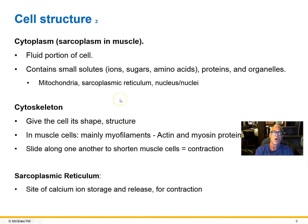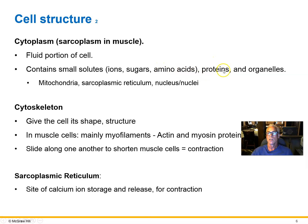The cytoplasm is the water within the cell, enclosed by the cell membrane, and everything dissolved and found within it. In the cytoplasm we find ions, sugars, amino acids, other small solutes, as well as larger solutes like proteins, and then finally organelles — for example, mitochondria, sarcoplasmic reticulum, and the nucleus, or in the case of a skeletal muscle cell, many nuclei.